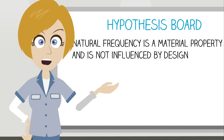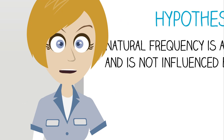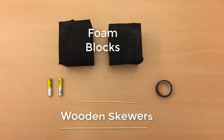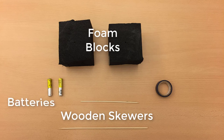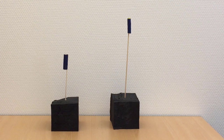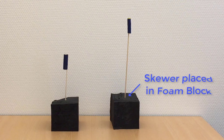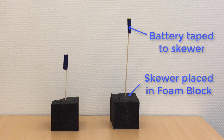Now that we have the general idea for our test, let's add in a few more specifics. While I don't have a bridge lying around to test, and you probably don't either, we can use some smaller items for our experiment. I have here two foam blocks, two wooden skewers of different sizes, two batteries, and a roll of tape. Put together, they form our two test specimens. One end of each skewer is pushed into the foam block, with the other end supporting a battery taped to it. The result is two systems that have the same mass, but slightly different designs. Now let's get to testing!